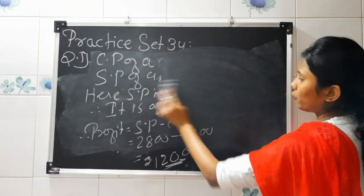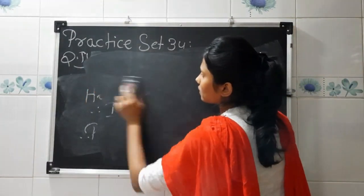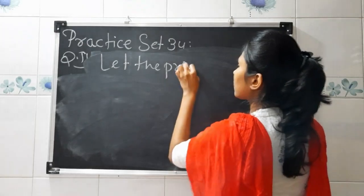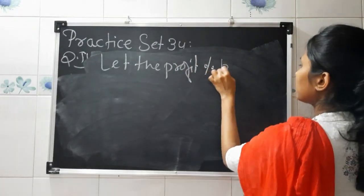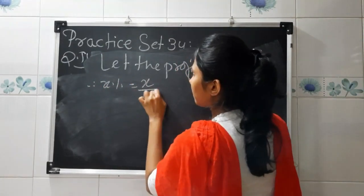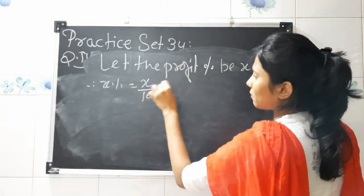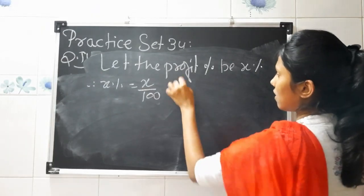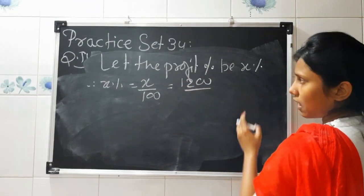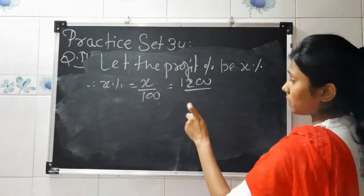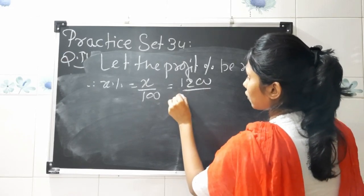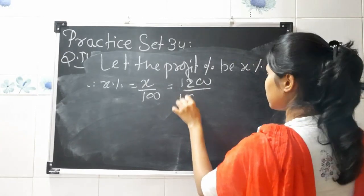Now for the next part, we have to find the profit percentage. Let the profit percentage be X percent. Therefore, X upon 100 equals profit divided by cost price, that is 1200 upon 1600. Profit percent and loss percent are always calculated on the basis of cost price, so we take the denominator as cost price, which is 1600.